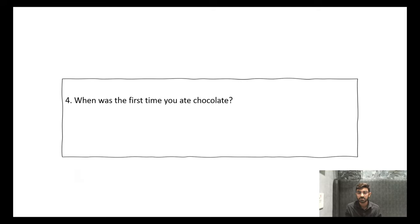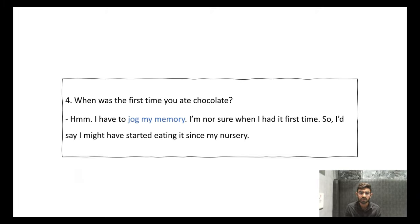Then the next question: When was the first time you had chocolate? Now, don't give a direct answer to this question. Like when I was a child I had chocolate. No. This means you have memorized this answer. How will it be known? Because this question is demanding which was the first time. When was the first time you ate chocolate? Now you have grown so much that you will remember the exact moment when you first ate chocolate. Straightforward, no. So how to give the answer? Give a vague answer. Vague means around that time, not exact time. So the answer you can give: I have to jog my memory. I'm not sure when I had it first time. So I'd say I might have started eating it since my nursery. Jog my memory means you have to remember when you ate chocolate or did any thing. Jog my memory, this phrase you can use anytime when a question is talking about the very distant past.